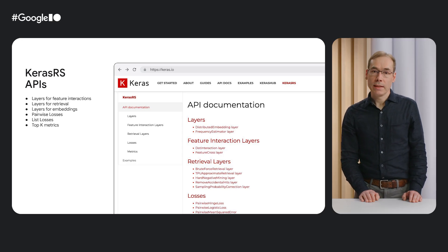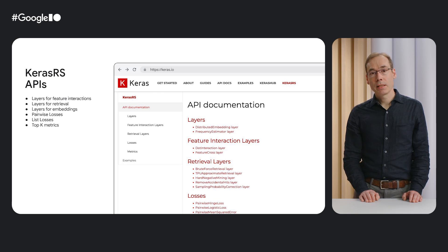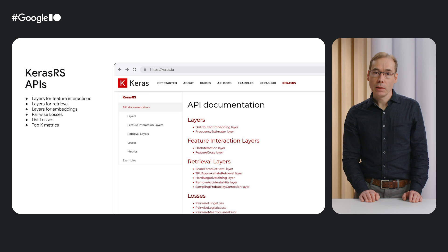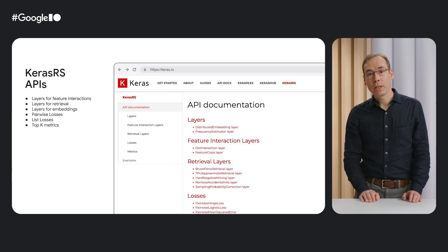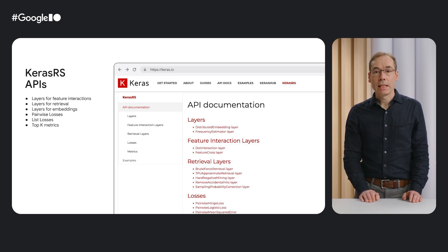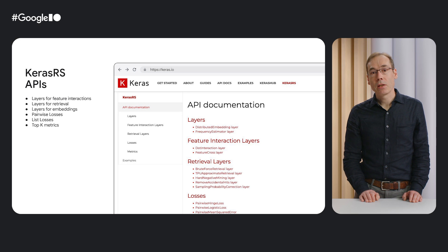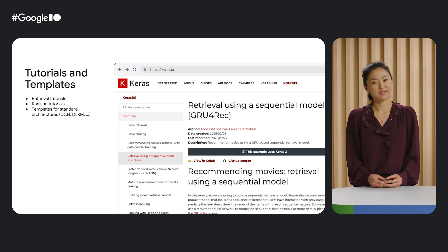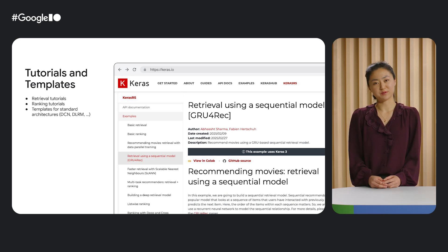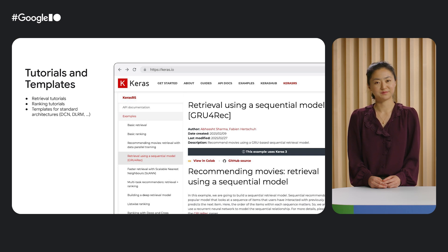Keras Recommenders provides specialized layers, losses, and metrics designed specifically for training high-quality recommender models. This includes everything from feature interaction layers and retrieval layers, to pair-wise and list-wise losses, along with a diverse set of top-k metrics for candidate ranking. And because Keras RS is built on Keras 3, these components are backend agnostic, supporting JAX, TensorFlow, and Torch. One of the best things about Keras is the wealth of guides we have, and with Keras RS we're adding to that. We have a wide selection of pedagogical starter examples to introduce the key concepts of recommender models, as well as code for standard architectures which you can use as templates to get started on your project.